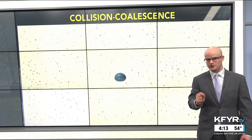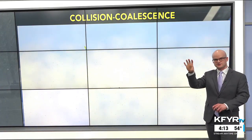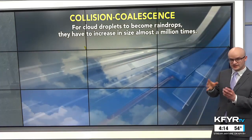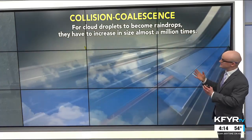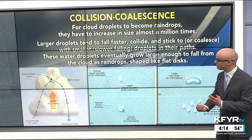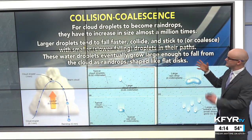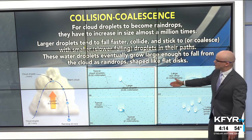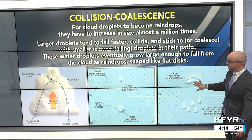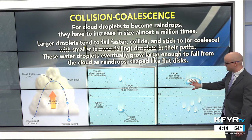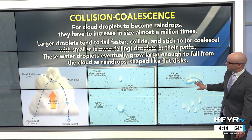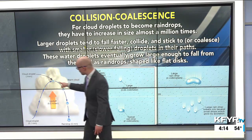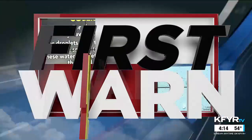The other process of precipitation forming in clouds is collision coalescence. This is more for warmer clouds that don't extend all the way up into the freezing levels of the atmosphere, mostly during the summertime. You have a bunch of really small cloud droplets that need to increase in size almost a million times to get heavy enough to fall to the ground. The larger droplets tend to fall faster, collide, and stick together — that's where 'coalesce' comes from — with those smaller droplets in their paths, eventually growing large enough to fall as raindrops.